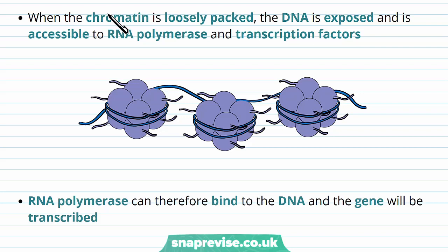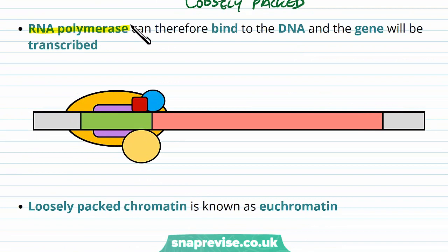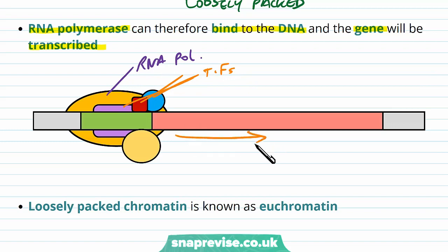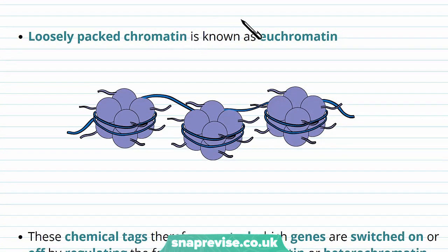Now let's consider the opposite scenario. When the chromatin is loosely packed, the DNA is exposed and accessible to the RNA polymerase and the transcription factors. It's still associated with those histones, which is very important, but the DNA now has regions where it's very accessible in a very loose arrangement. Therefore, the RNA polymerase enzyme is allowed to bind to the DNA and the gene can then be transcribed. The RNA polymerase has space to bind, and all of those transcription factors can have space to bind too, encouraging RNA polymerase binding. The gene will be transcribed and the product will be made. Loosely packed chromatin is known as euchromatin.